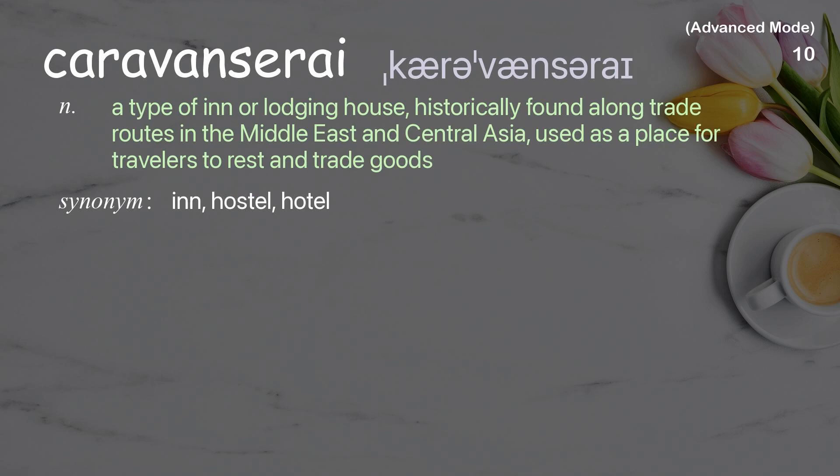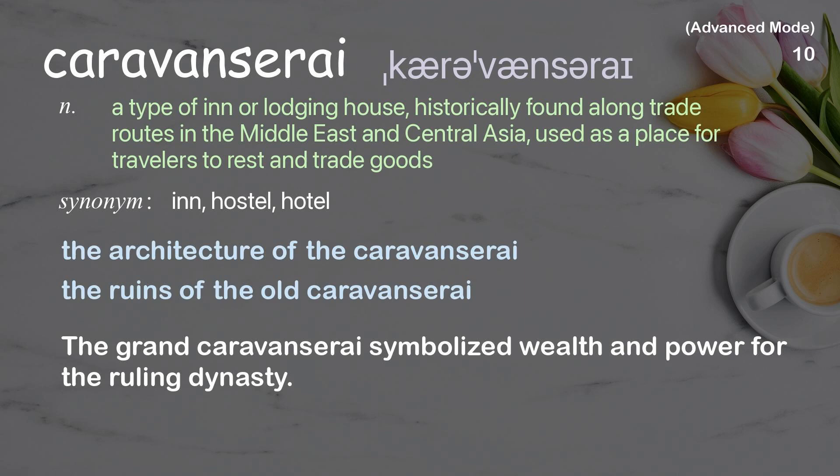Caravanserai: A type of inn or lodging house, historically found along trade routes in the Middle East and Central Asia, used as a place for travelers to rest and trade goods. Examples: The ruins of the old caravanserai. The grand caravanserai symbolized wealth and power for the ruling dynasty.